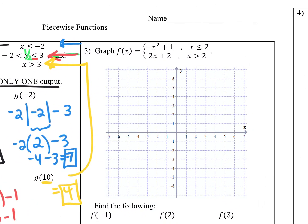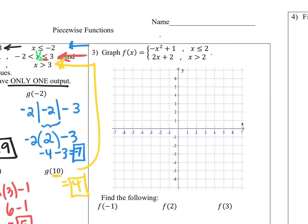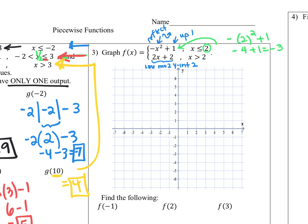For number three, we're going to graph the piecewise function. The first piece is negative x squared plus one — a U flipped upside down and moved up one. For the endpoints, if I put x equals two into the quadratic: negative two squared plus one is negative four plus one, which is negative three. So at the point (2, -3) I will have a closed circle.